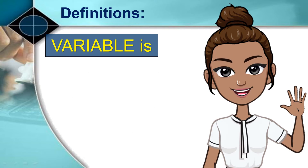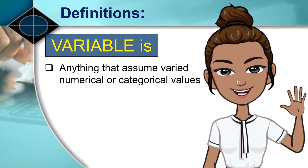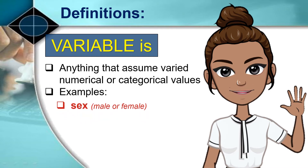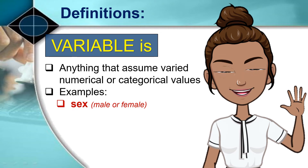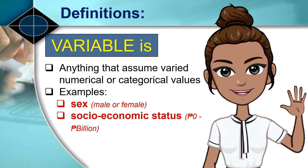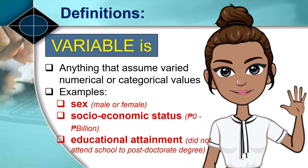A variable is anything that may assume varied numerical or categorical values. For instance, sex is a variable — it may be male or female, but it won't be applicable as a variable if the setting of the research is an exclusive school for girls. Socio-economic status is a variable, ranging from zero to billion pesos. Educational attainment of parents is another variable, ranging from did not attend school to post-doctorate degree.